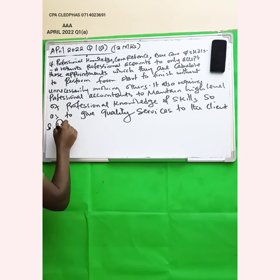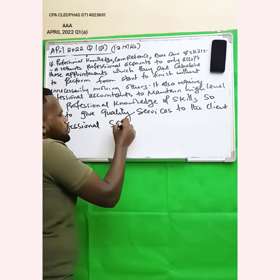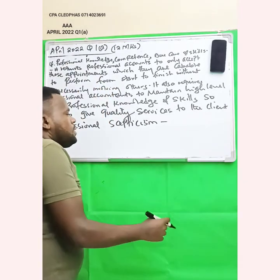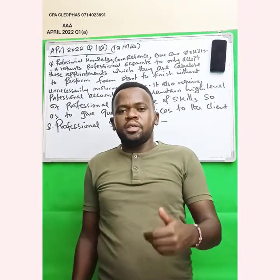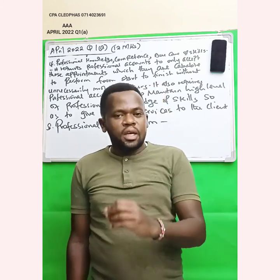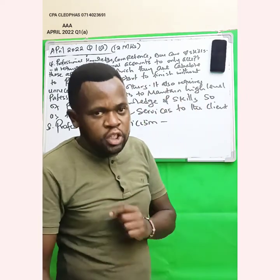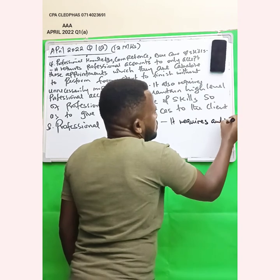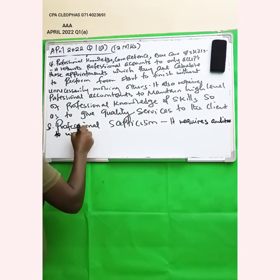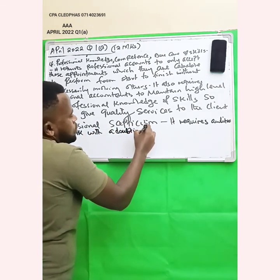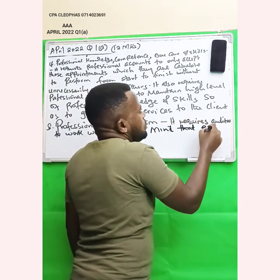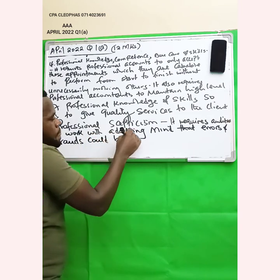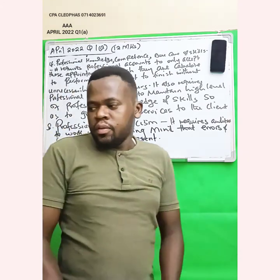Another standard is professional skepticism. This principle requires auditors to work with an attitude of doubt — a doubting mind — that something wrong might exist in the financial statements, meaning that errors and frauds could be present.